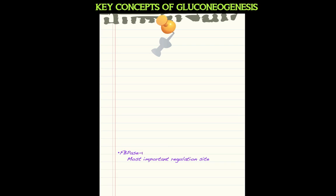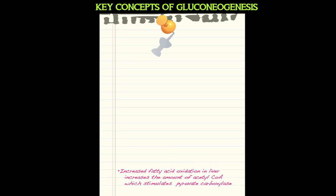Fructose-1,6-bisphosphatase is the most important regulatory enzyme in gluconeogenesis — just as PFK1 is the most important regulatory enzyme in glycolysis.